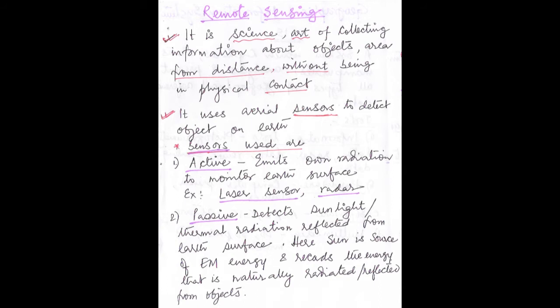What is remote sensing? Remote sensing is actually a science as well as an art. Here by remote sensing we collect the information about objects and areas from a distance. The word remote means from a distance without being in physical contact with the object. Sensing means we are taking or collecting the information about the object.